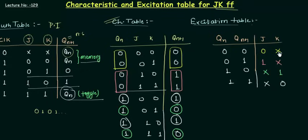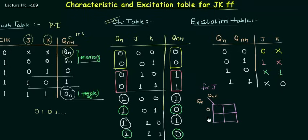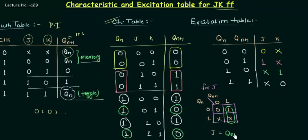Now we will find the values for J and K using the K-map. We have two variables so a 4-cell K-map is required. The first K-map is for J, with variables Qn and Qn+1. Filling it in: 0, 1, don't care, don't care. There is only a single 1, so the grouping is simple. Considering the don't care as 1, J is equal to Qn+1 because Qn is changing from 0 to 1. So J = Qn+1.